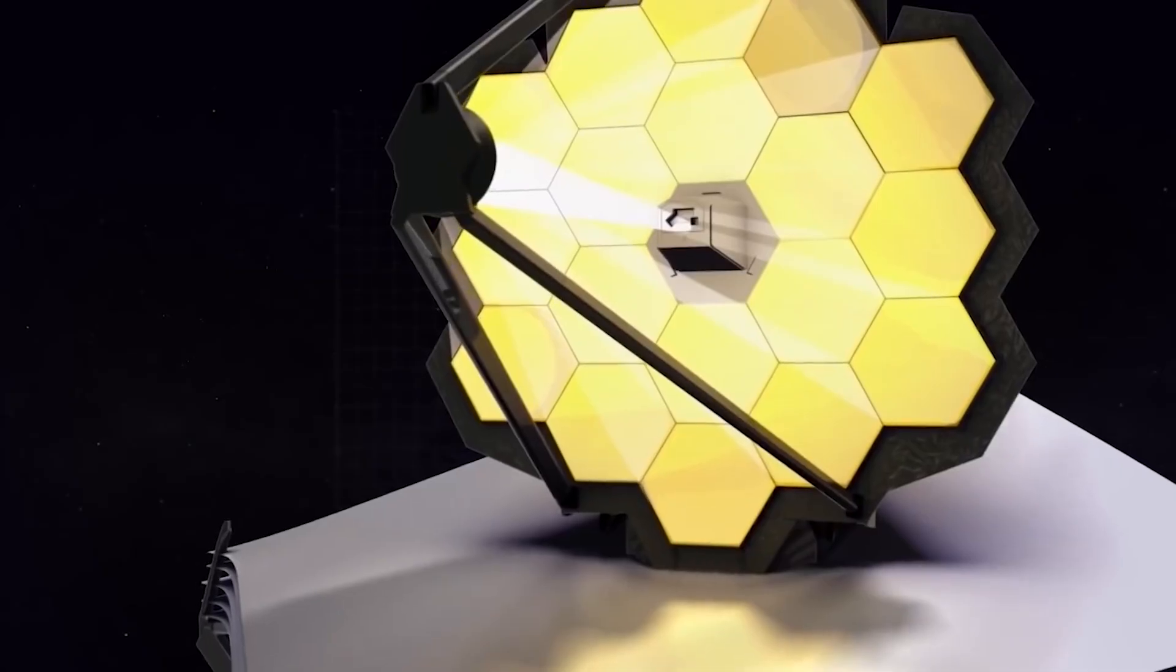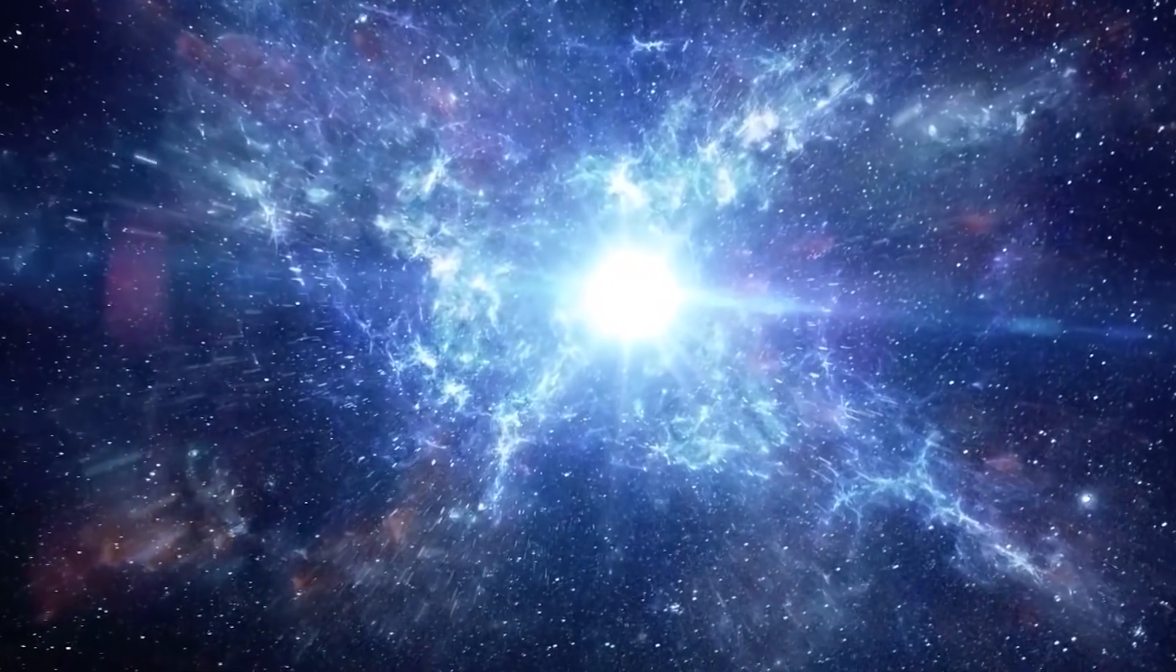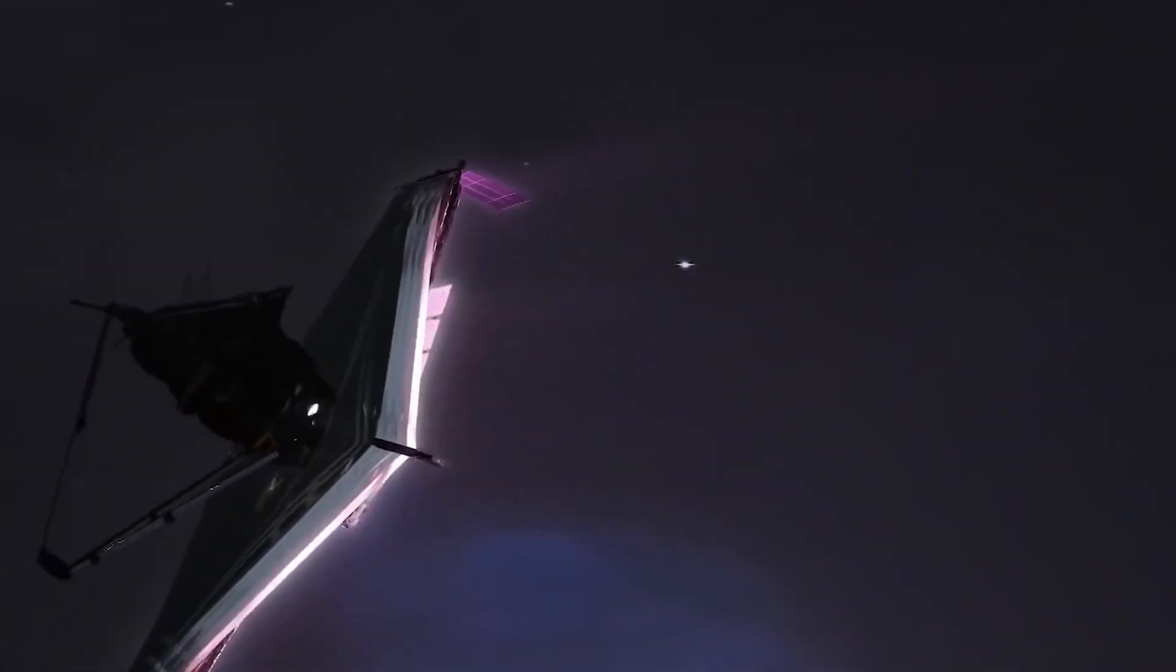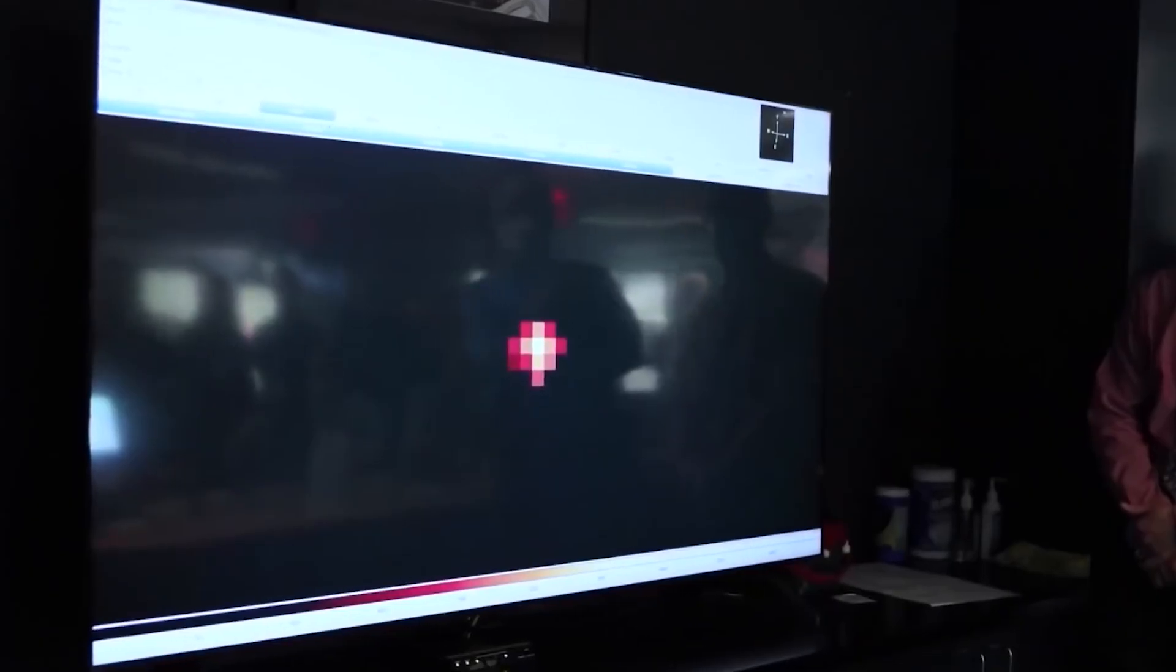Scientists used the NIRcam to align these mirrors. Each mirror segment took its own picture of the same star. These 18 unfocused pictures of the same star were brought together in one frame as a sharp image, giving it the shape of a mesmerizing hexagonal snowflake pattern.